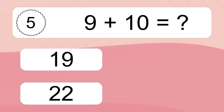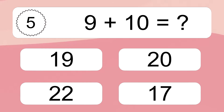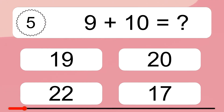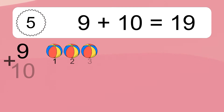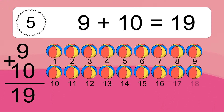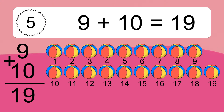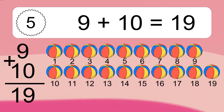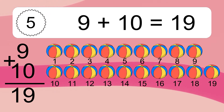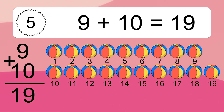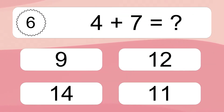9 plus 10 equals what? Let's count it: 1, 2, 3, 4, 5, 6, 7, 8, 9, 10, 11, 12, 13, 14, 15, 16, 17, 18, 19. 9 plus 10 equals 19.